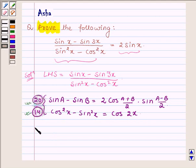LHS can further be written as sin x minus sin 3x is in the form of sin A minus sin B.